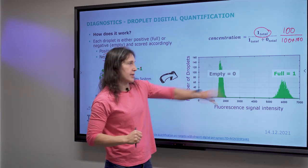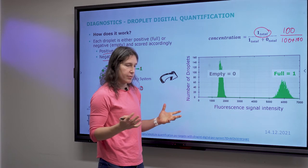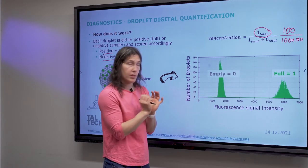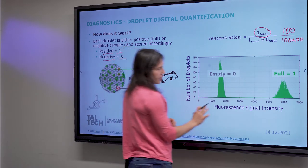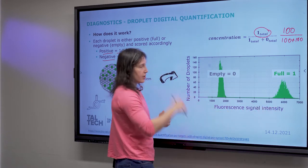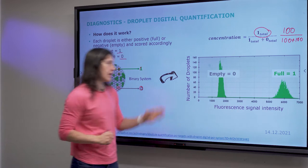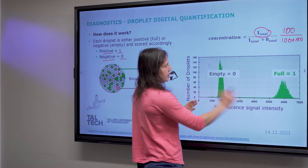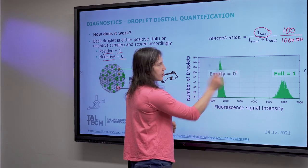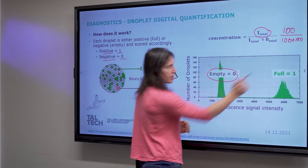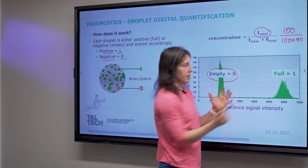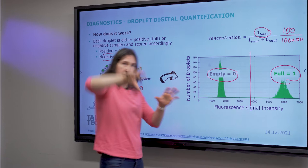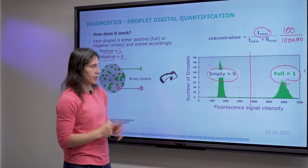If you look at the graph here, we use fluorescence to find which droplets are actually full. We can have the fluorescence signal intensity on the x-axis and the number of droplets on the y-axis. On the scale you can find that all your empty droplets have a very low signal, so you can separate full from empty and that way you can identify them.